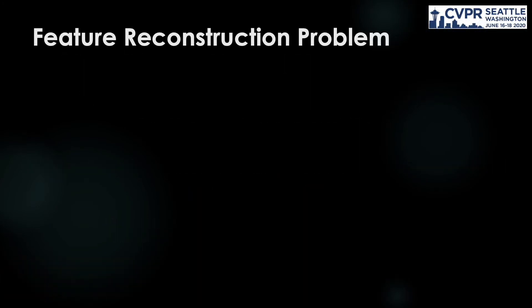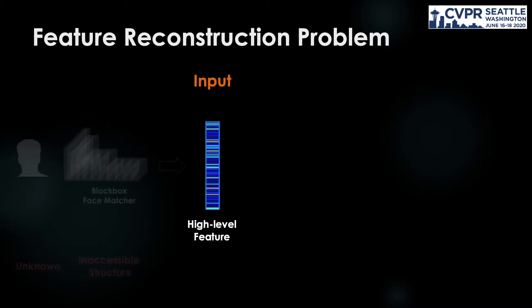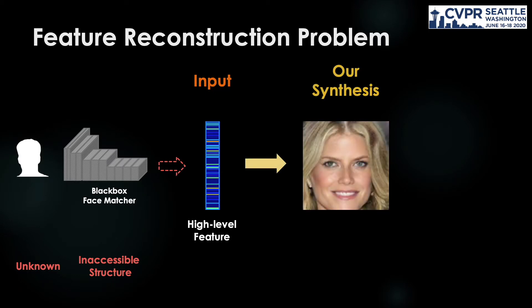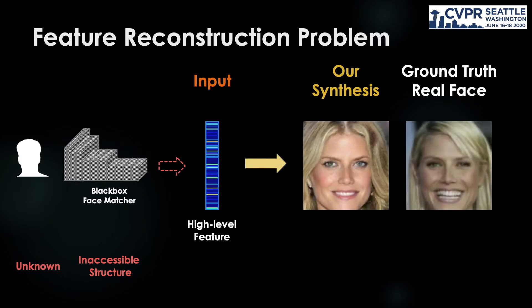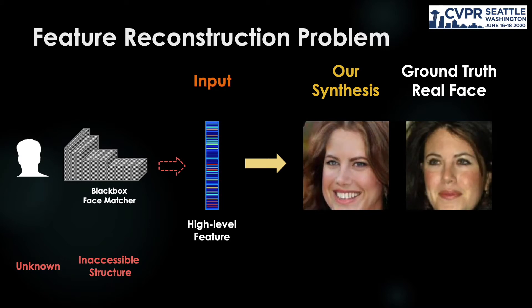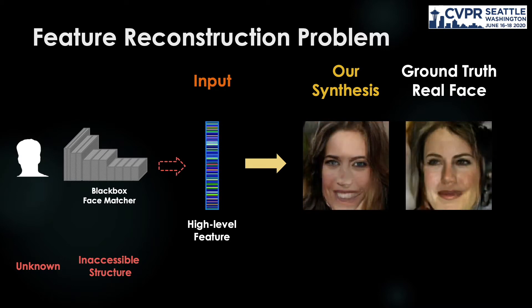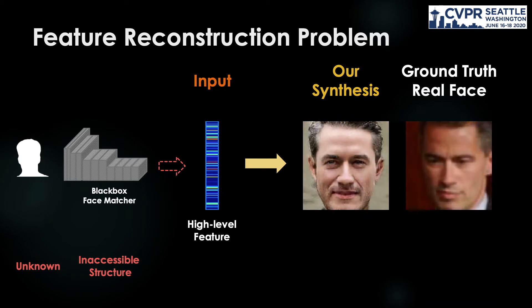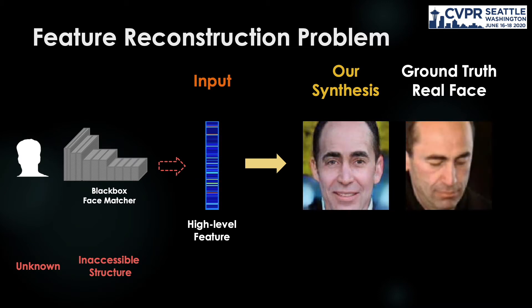In this work, we study the feature reconstruction problem, where the input is the feature representation extracted from a given black-box face matcher, and the output is a subject's appearance. This task is quite challenging as the accessible information is very limited. Moreover, the feature representation is usually at a high abstract level and difficult to interpret.